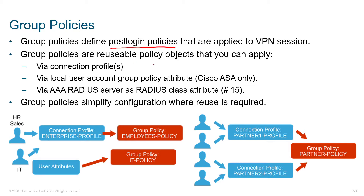Group policies are reusable policy objects that you can apply through the connection profile itself, so as soon as somebody connects with a specific connection profile this could be applied, or through the local user account group policy attributes — that is within your running config. Think about being at the command line, global config, using the username command. When creating those user accounts, you can manually associate policies to them. This is great for the lab or maybe your own private ASA at home, but not typically something you'd do with any intent to scale.